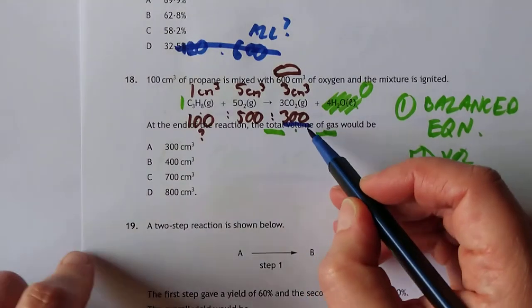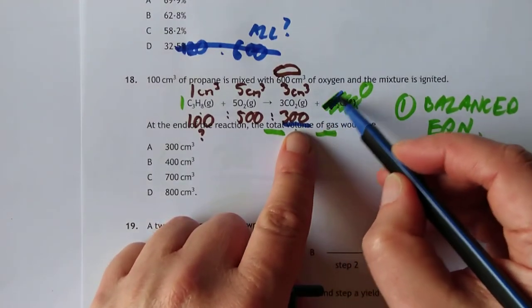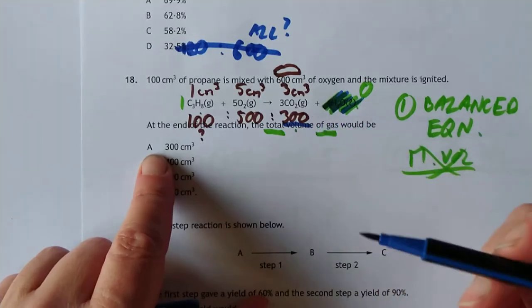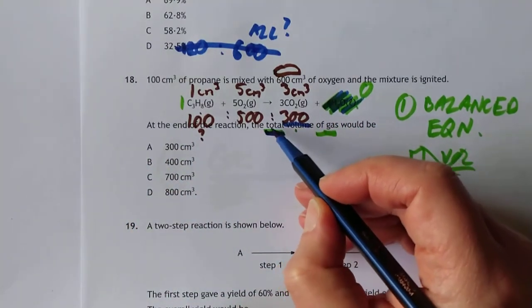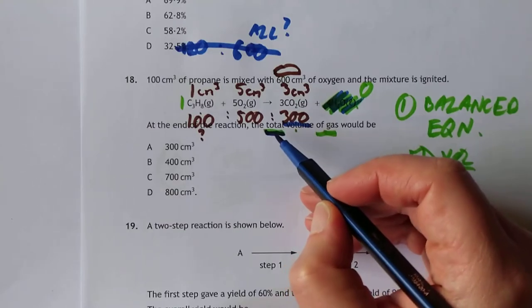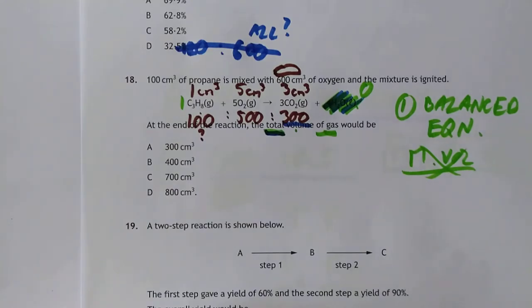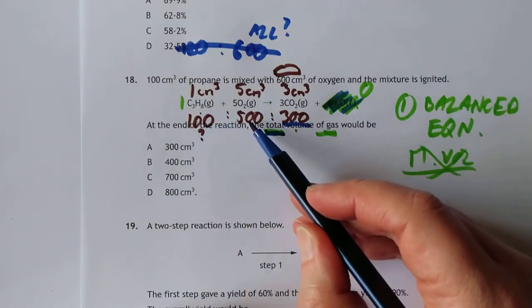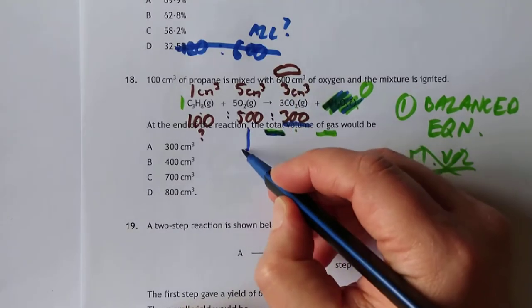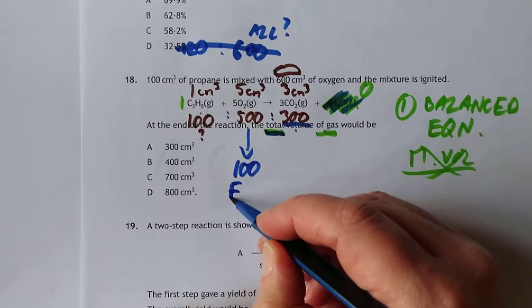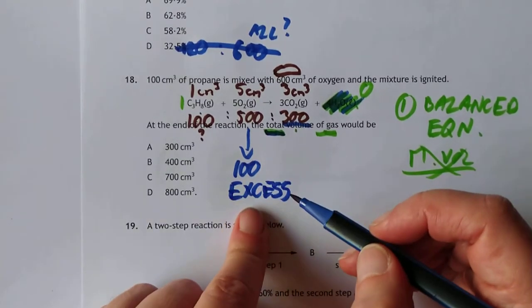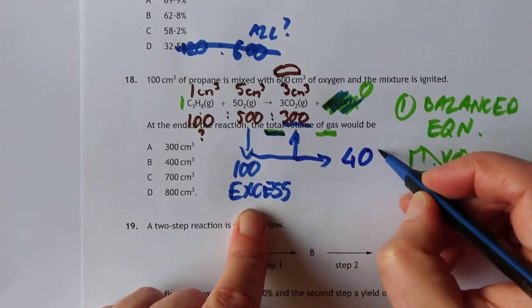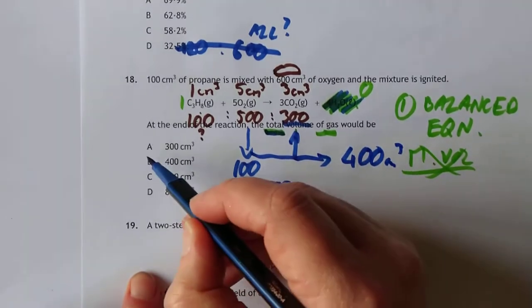At this point you might be tempted to stop and say, oh look, 300. Baldy said we don't need to worry about the water, so we've made 300 centimeters cubed. But can I bring you back to this word here? Total volume of gas. We burned all of the propane, we only burned up 500 of the 600 of the oxygen. Therefore we had 100 excess. That's the definition of an excess chemical - there's some left at the end. We need to add that to our 300, and we get a total of 400 centimeters cubed.